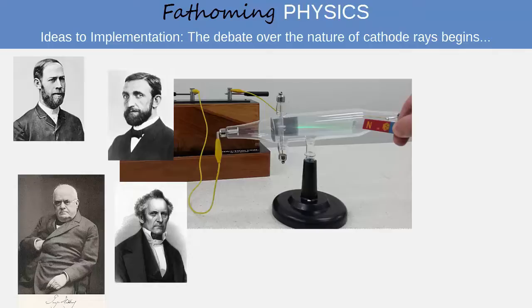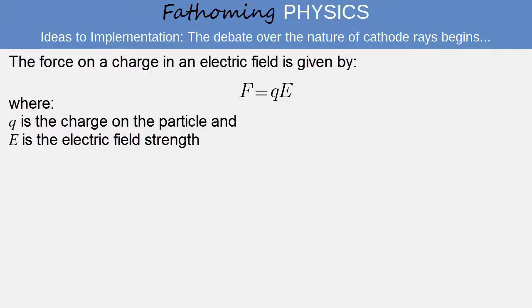In the final part of the lesson we will revise the electromagnetic relationships between the force experienced by charged particles in electric and magnetic fields, so that we can understand the relevance of these observations in the debate about the nature of cathode rays. The force a charge Q experiences in an electric field of strength E is given by the product of its charge and the field strength.